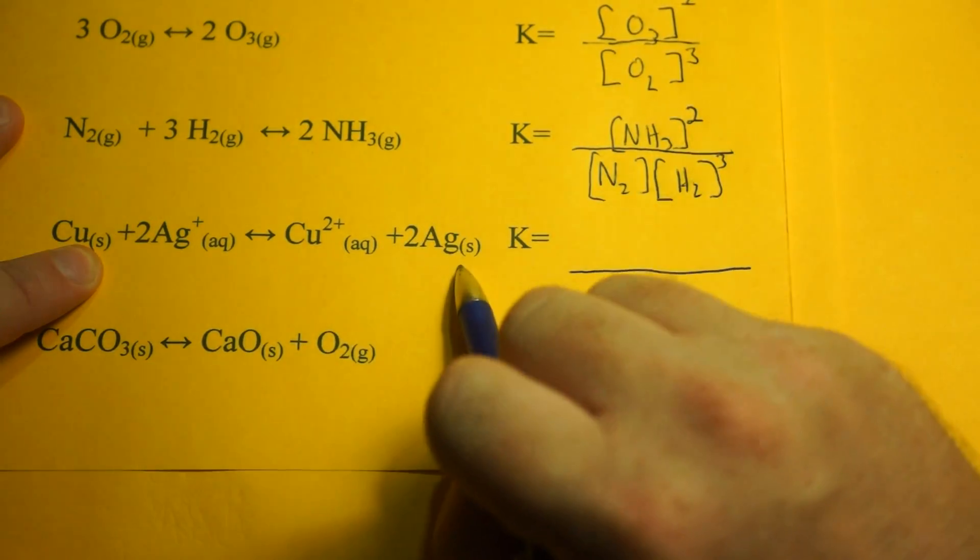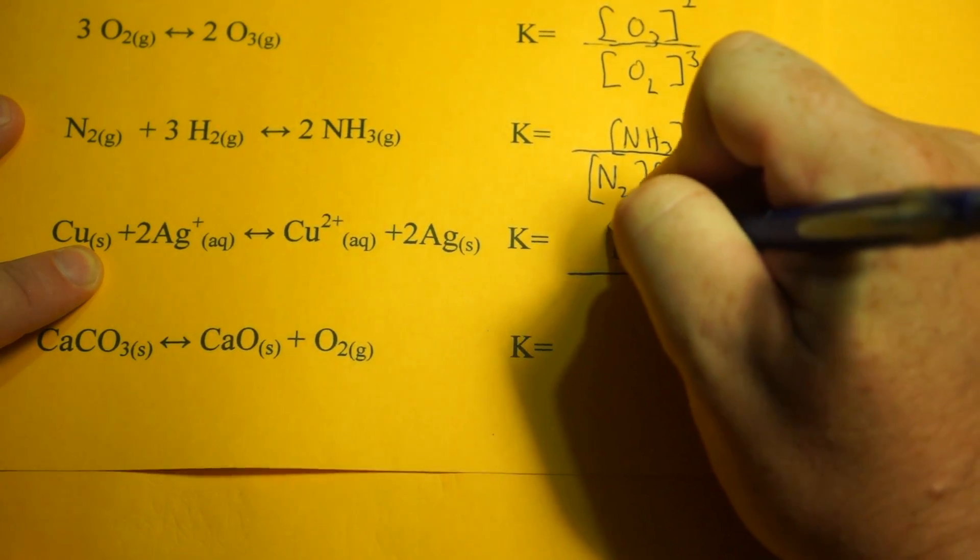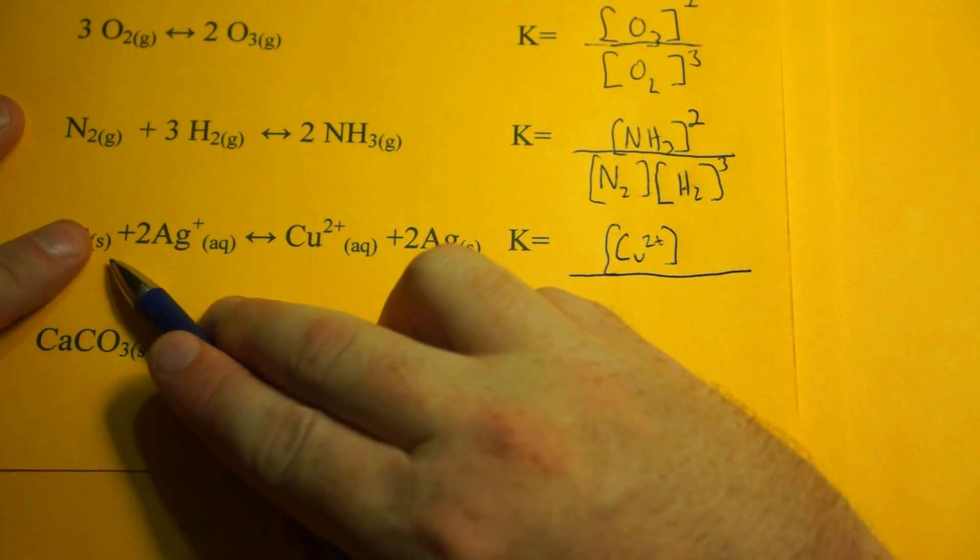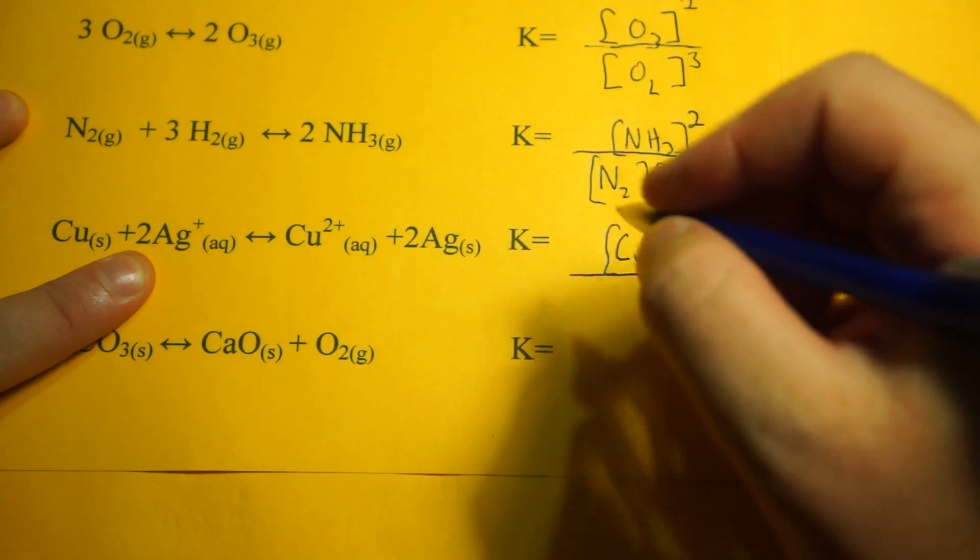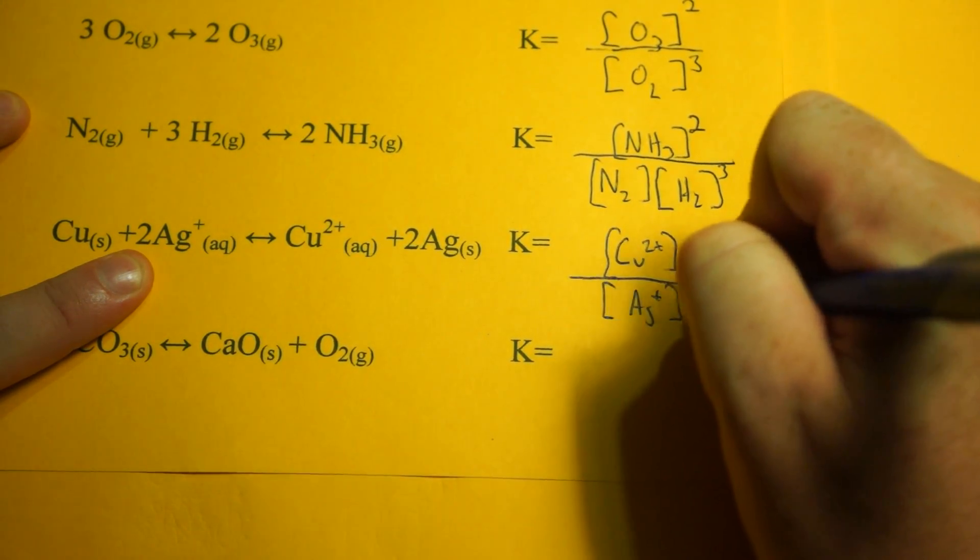So for products, see the Ag solid? That's gone, we don't write that. We do write the copper 2+ ion to the first power. On the reactant side, we have copper, which we don't use because it's a solid, but we do have Ag+, which I'll raise to the second power.